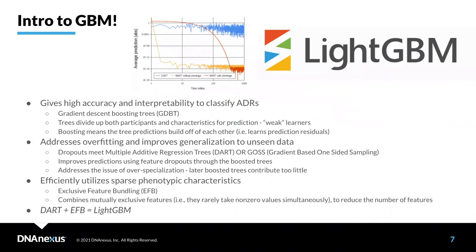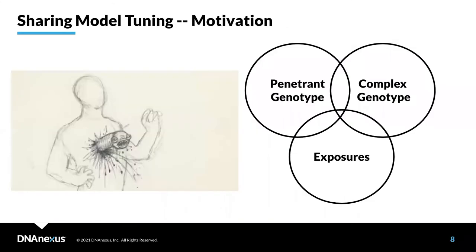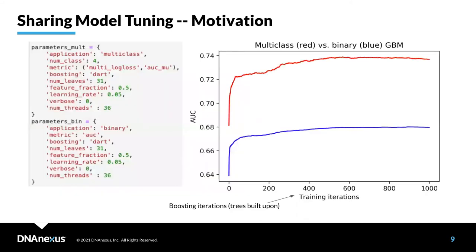As I discussed two weeks ago, Chao selected LightGBM to do the machine learning analysis on this data, really because of clusterability and sparsity of the phenotypic data, which makes a lot of sense. She and Nick were able to tune models and pick out features that were relevant. What we're doing is thinking about both penetrant complex genotypes as well as exposures. The other thing I discussed last time was how having an appropriate number of classes really helps with the baseline of model tuning.